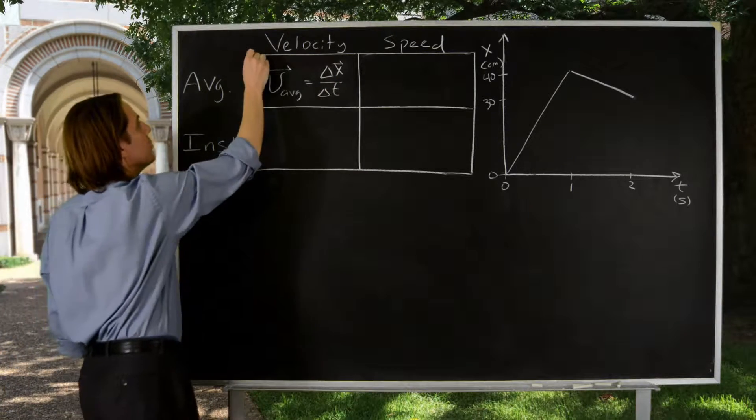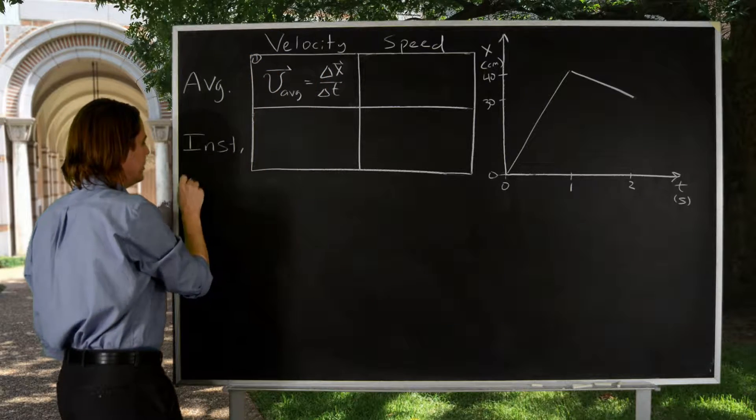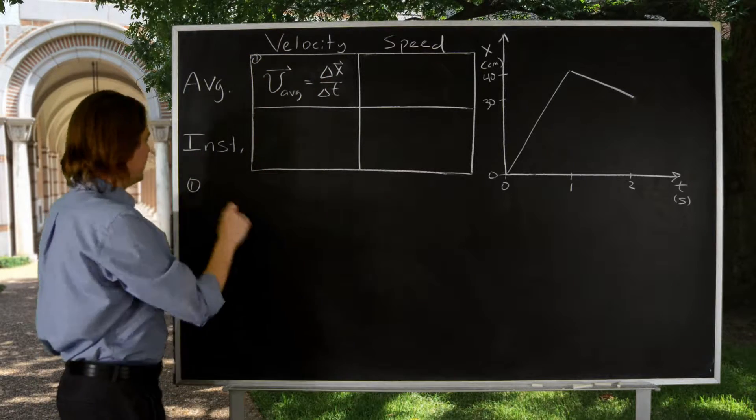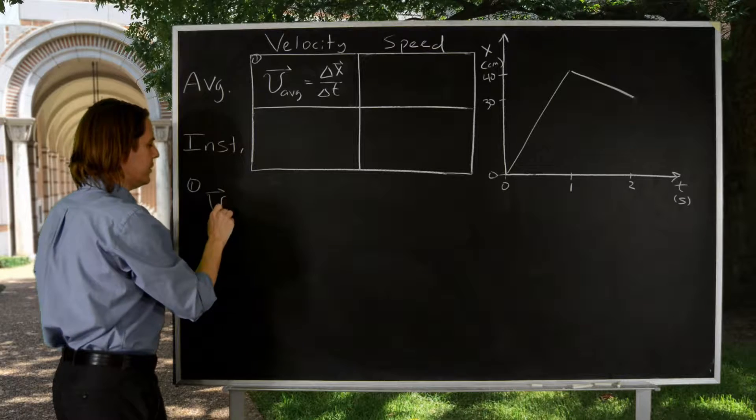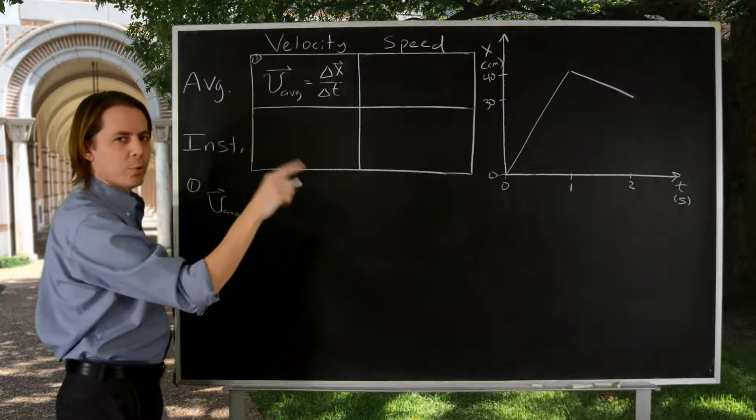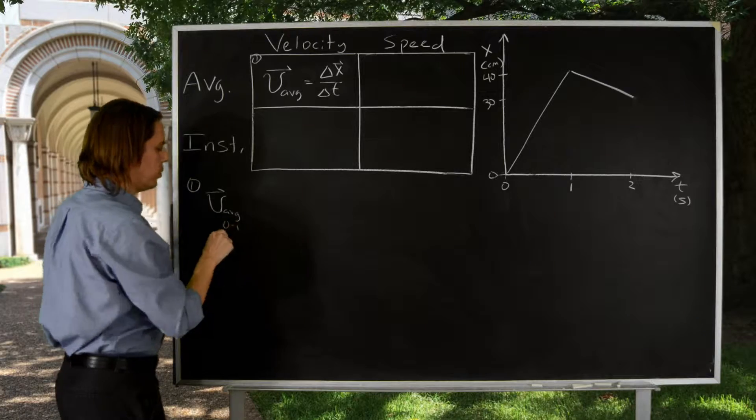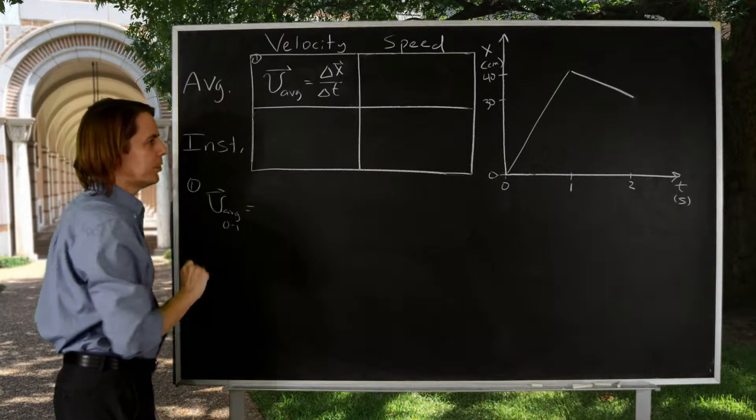So we're going to call this box one and just calculate a few average velocities based on our motion. So let's calculate the average velocity from zero seconds to one second.